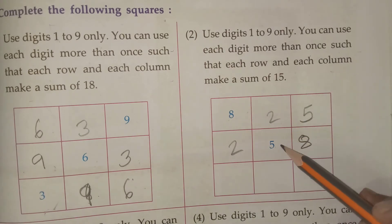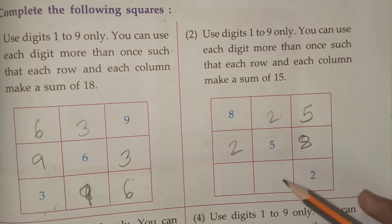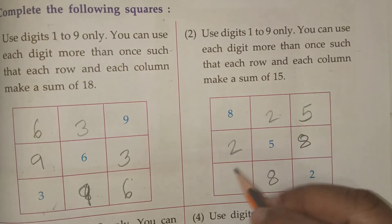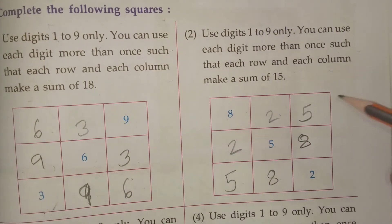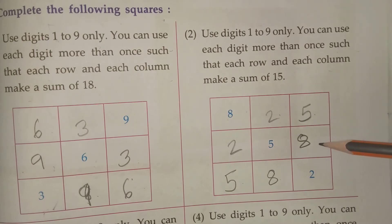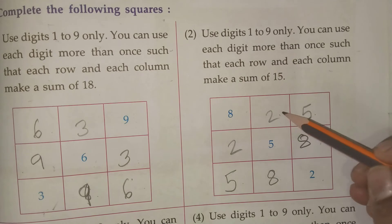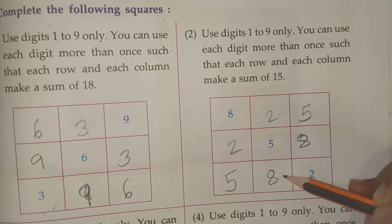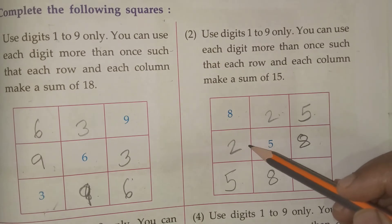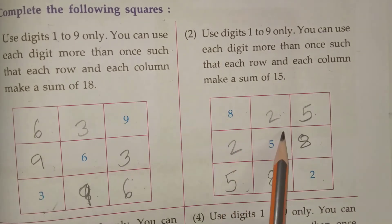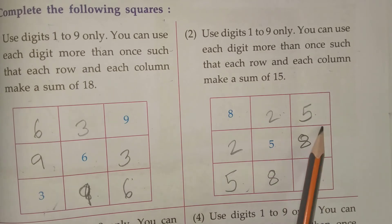Next here I am going to use 5, 7. 7 plus 8. 8, 9, 10. 10 plus 5. See? 5 plus 8, 10. 10 plus 5, 15. 8 plus 2, 7. 7 plus 5, 15.